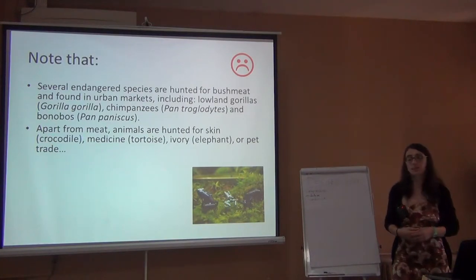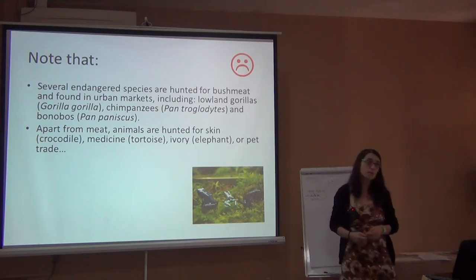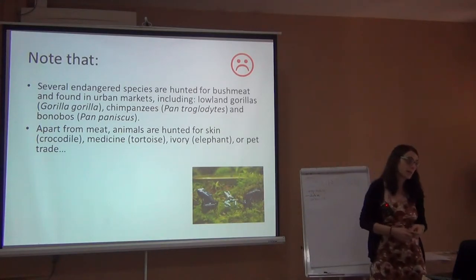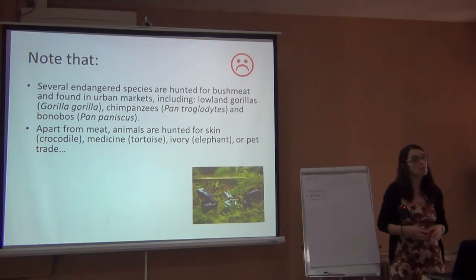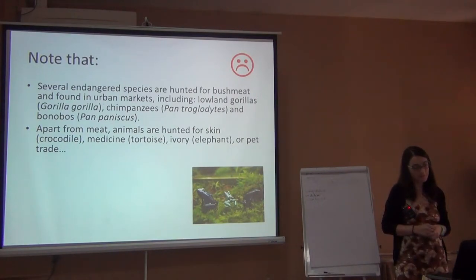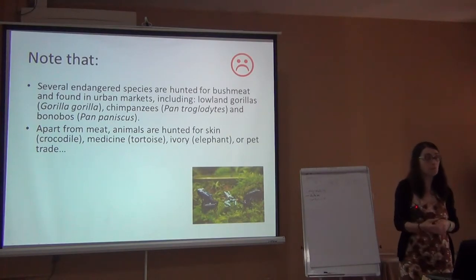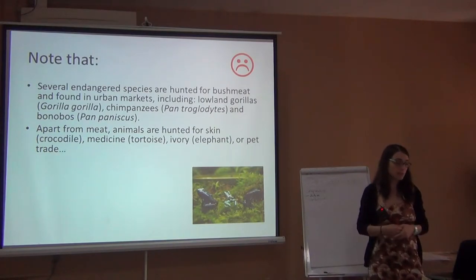In Madagascar, for example, the biggest issue is the pet trade. They have a lot of endemic frogs that fetch really high prices on the international illegal market. So when thinking about bushmeat issues, we mostly talk about food, but we need to remember that in some areas the illegal trade of pet animals is a bigger issue.